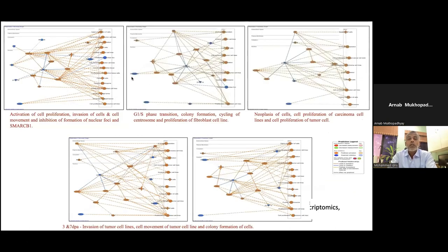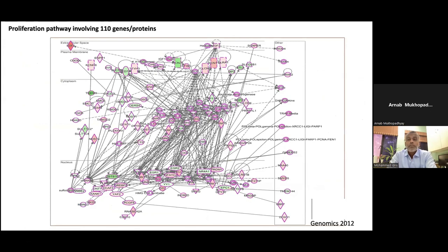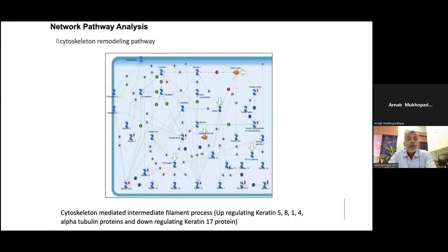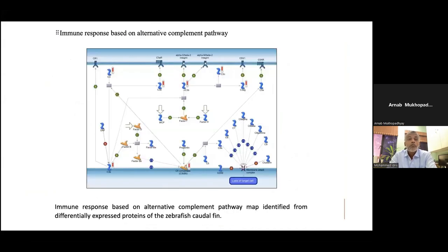We found several new canonical pathways associated with the regeneration mechanism. More than 110 genes and proteins were found to be associated in the proliferation pathway, which occurs from day one post amputation for structural regeneration. You can see how complex these pathways are. We also found cytokine remodeling pathway, immune response pathways associated — many of these were reported to be associated with regeneration for the first time.